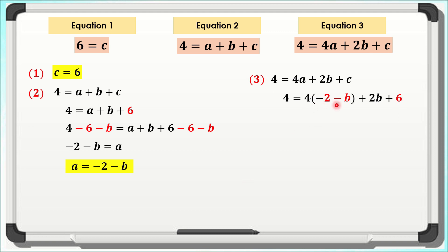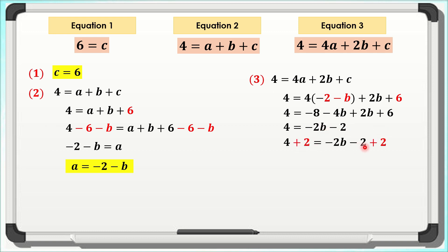Distributing 4 into the parentheses gives us 4 = −8 − 4b + 2b + 6. Combining like terms: −4b + 2b = −2b, and −8 + 6 = −2, so 4 = −2b − 2. Using the addition property of equality, adding 2 to both sides gives 6 = −2b. Dividing both sides by −2, we get b = −3.